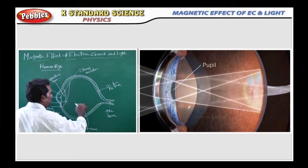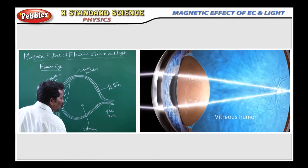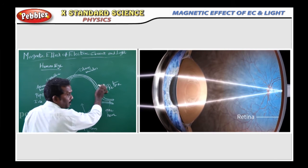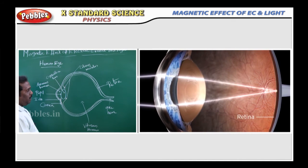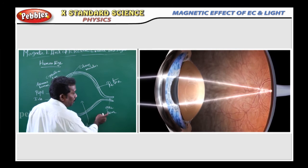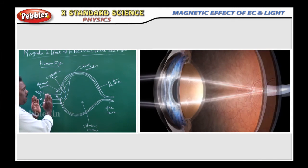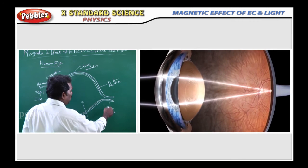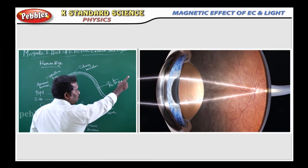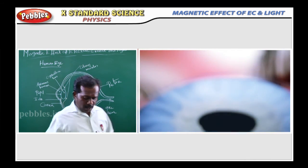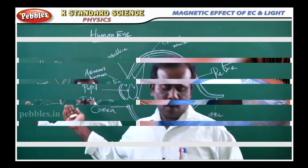Behind the lens, this region contains the vitreous humor, and this region forms the retina of the human eye. This is the optic nerve. The optic nerve is connected to the brain for the sensitivity of the image. Now we will discuss about these one by one.